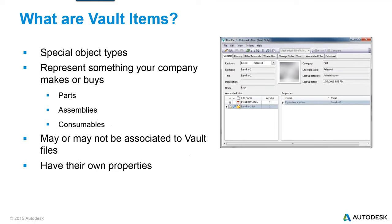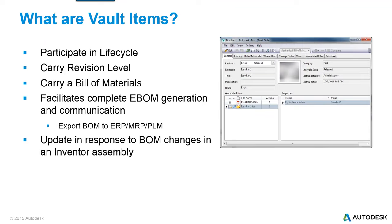Items in Vault are a special record type. Those of you currently using Vault are probably familiar with file records, which keep track of your CAD documents. You check those in and out, version history builds up, etc. Items are unique record types in Vault with different behavior and a different purpose. Items represent something that your company might make or buy — a part, an assembly, or a consumable like paint or grease. Their fundamental purpose is so you can generate a complete engineering bill of materials.